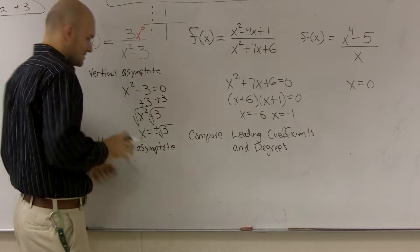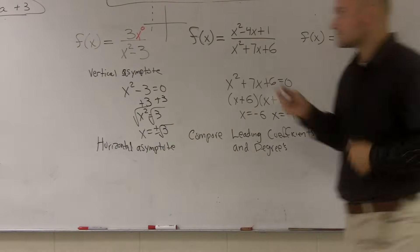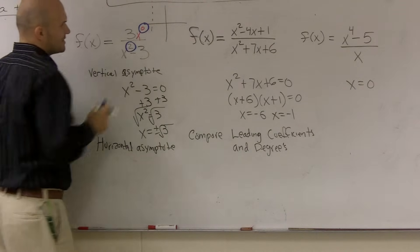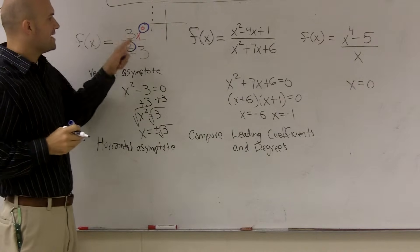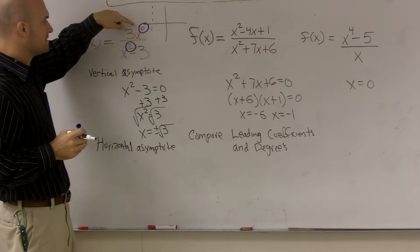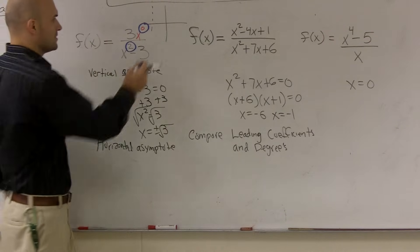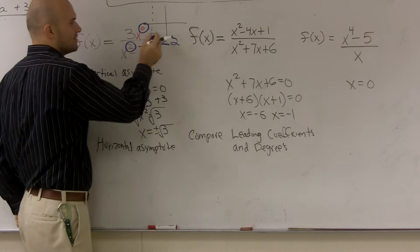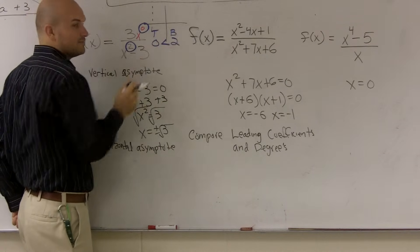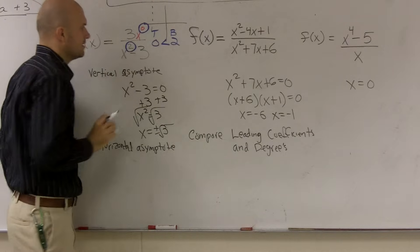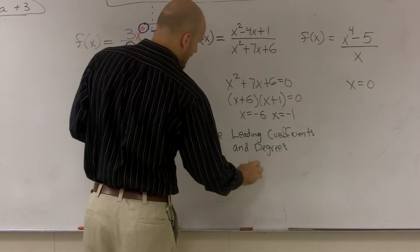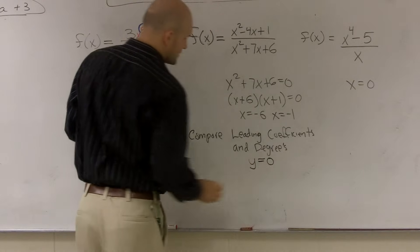So then the next thing I want to do is compare my degrees. And when my degree up top is less than the bottom, so when 0 is less than 2, the top is less than the bottom of your degrees, my horizontal asymptote is going to be y equals 0.